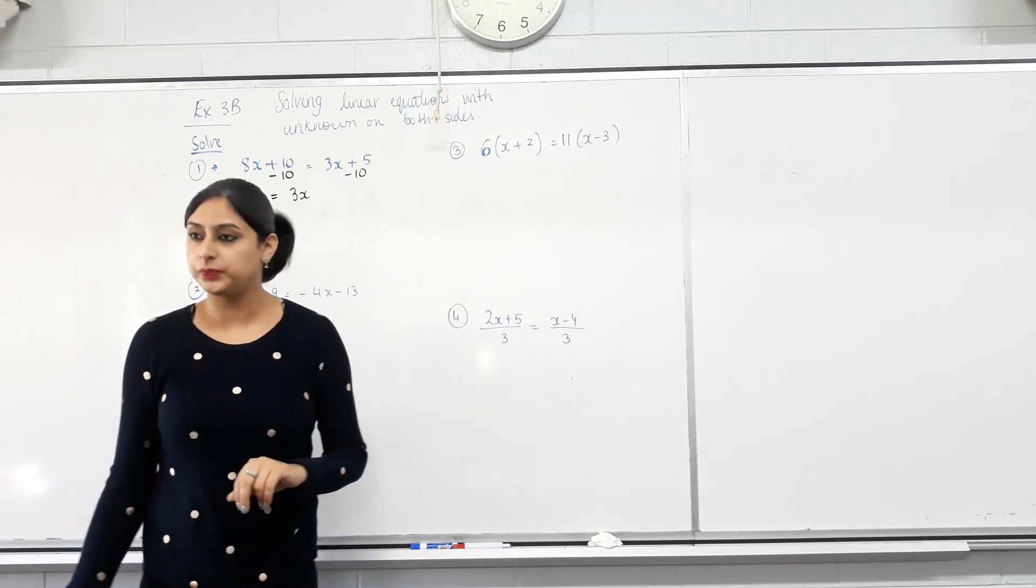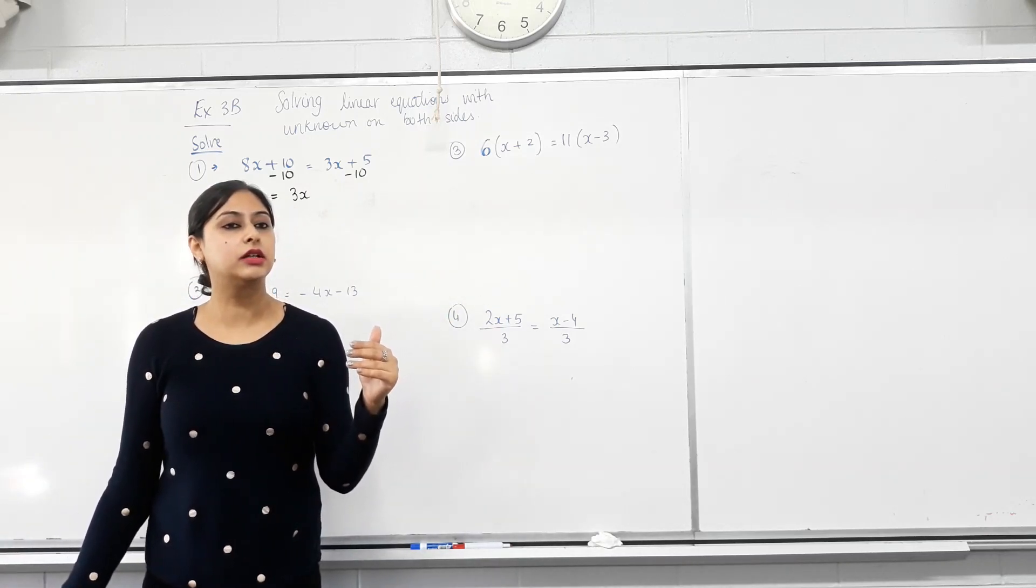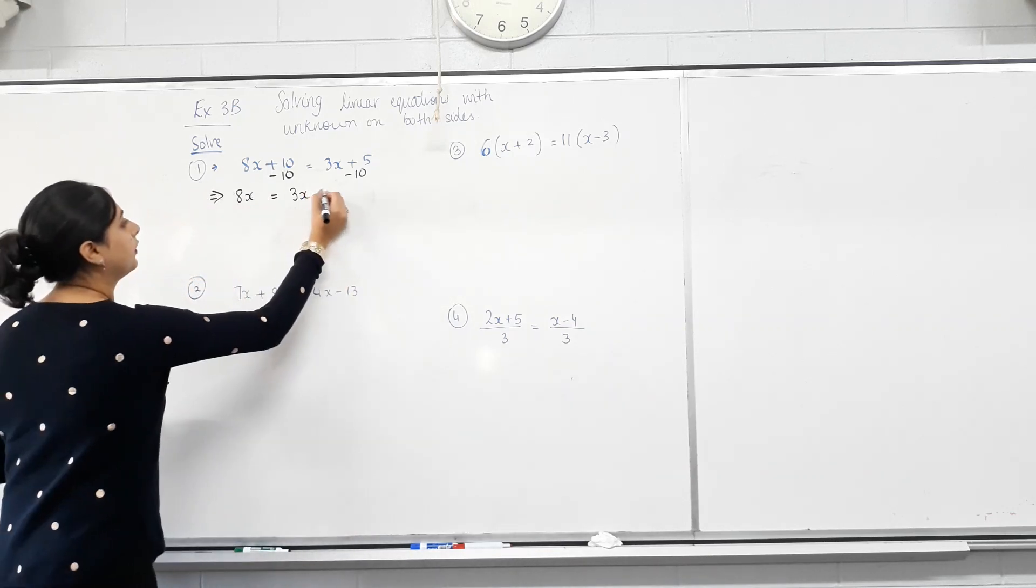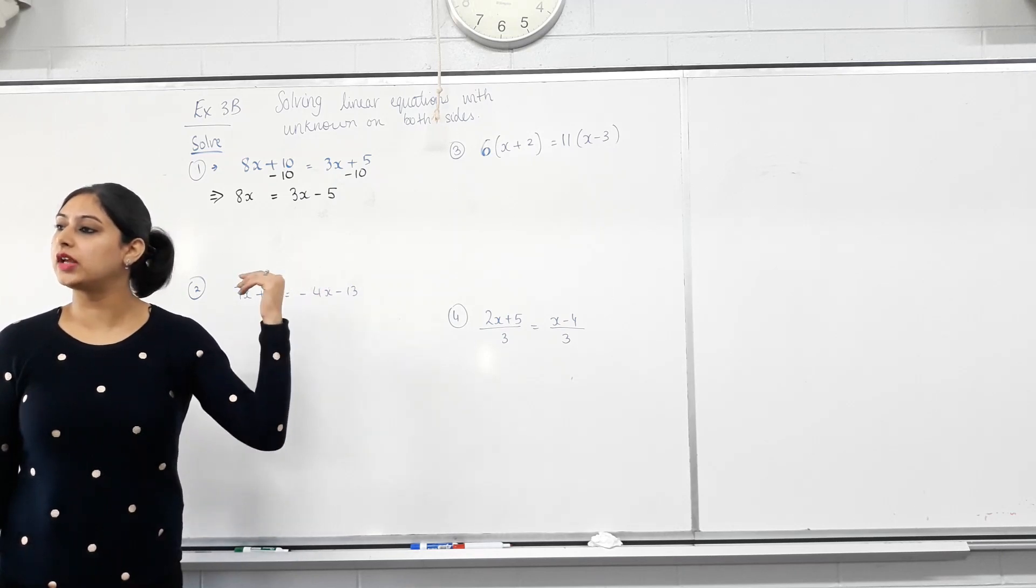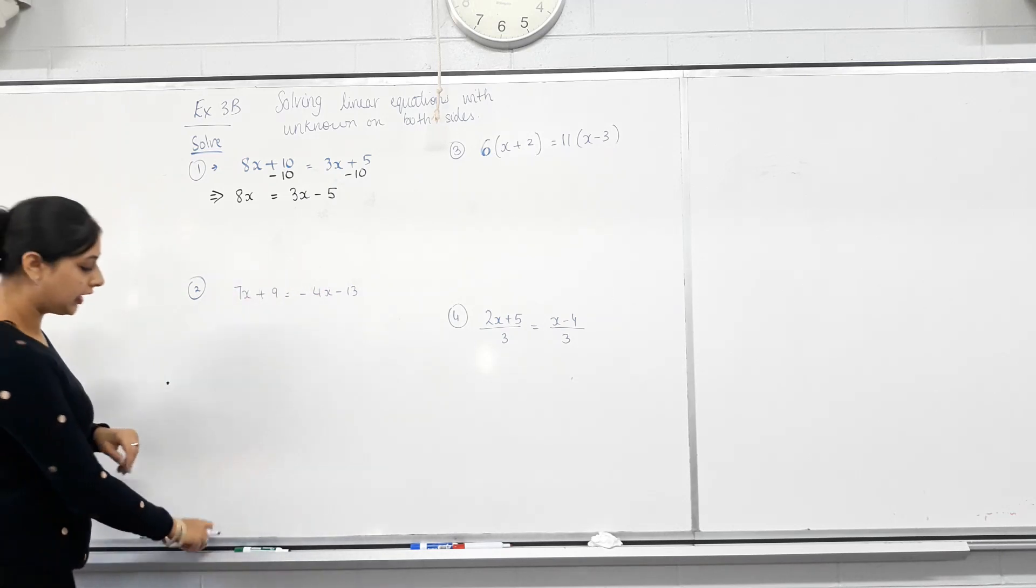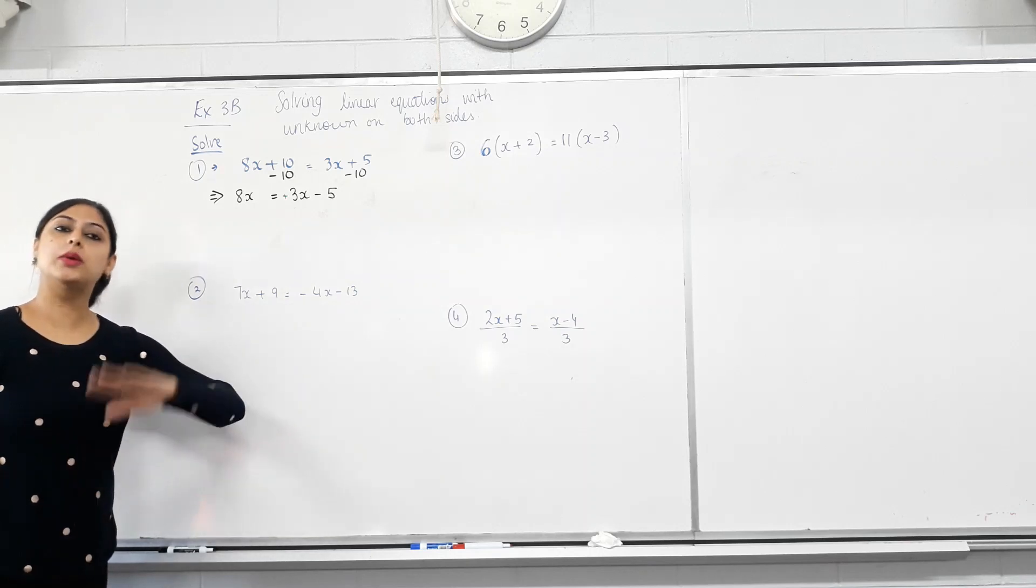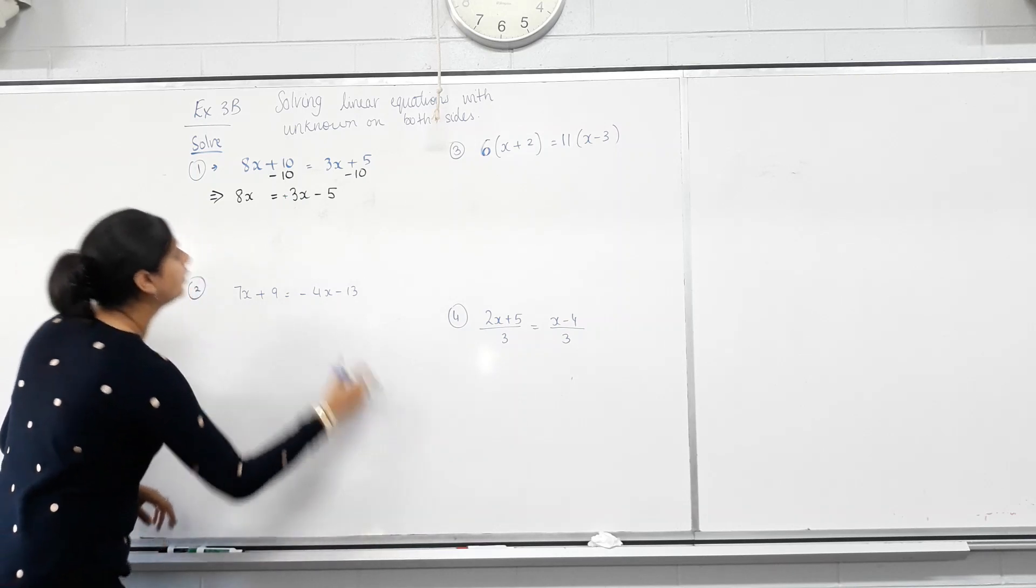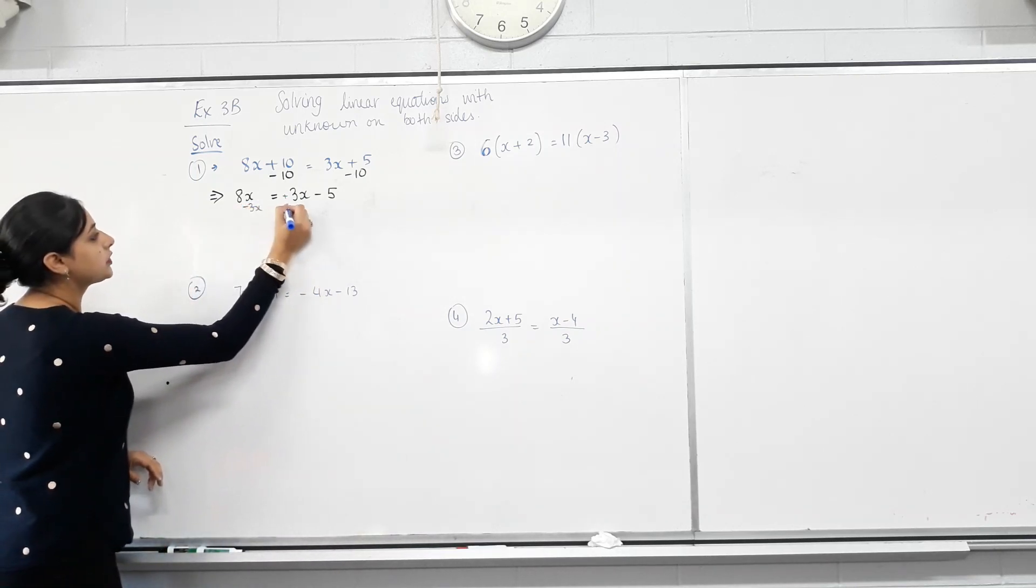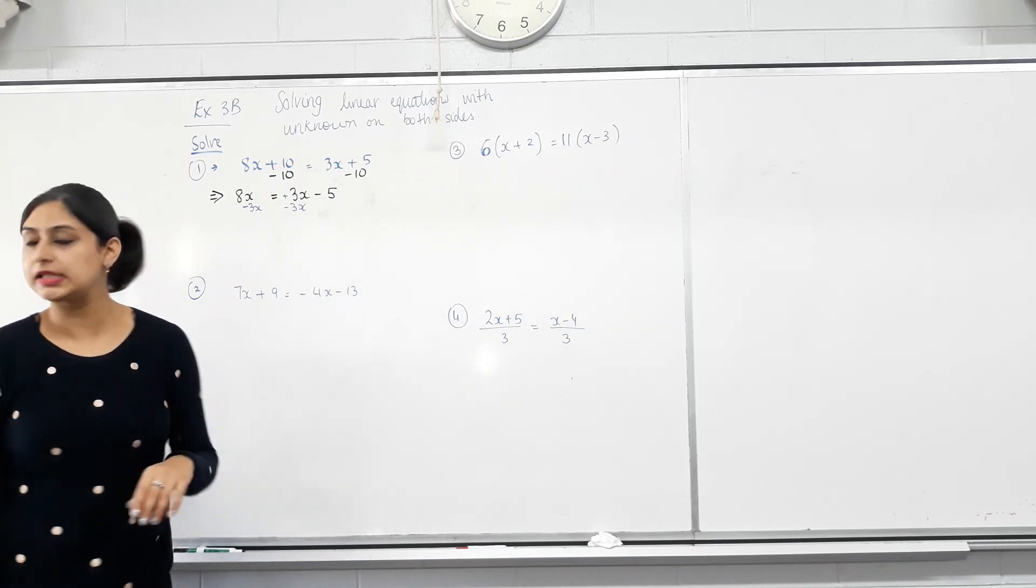5 and 10. Like terms? Yes. They're just numbers. 5 take away 10 is? Negative 5. Now, we need to move the 3x to left hand side. Is the 3x a positive 3x? Yes. So what's opposite of plus 3x? Minus 3x. So I'm going to minus 3x from both sides. Because whatever I do to one side, I can't do to the other. Yes?